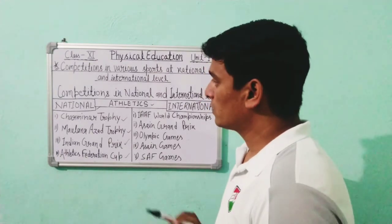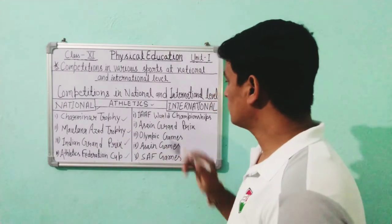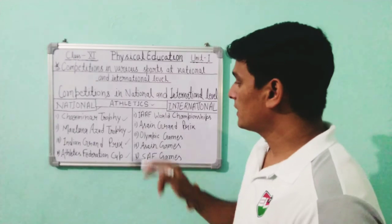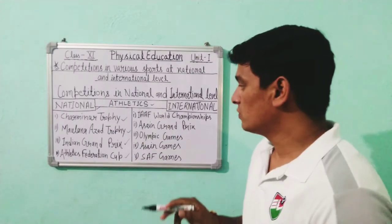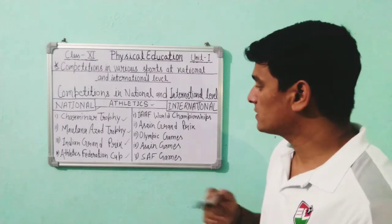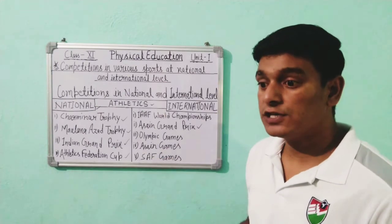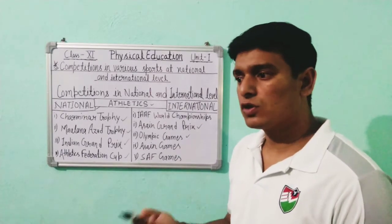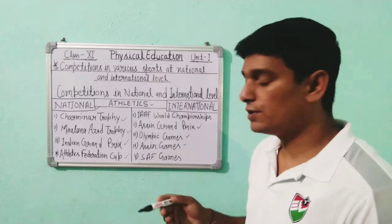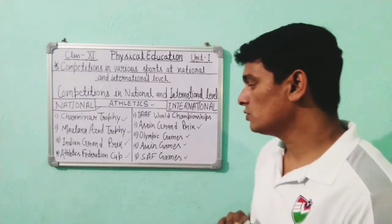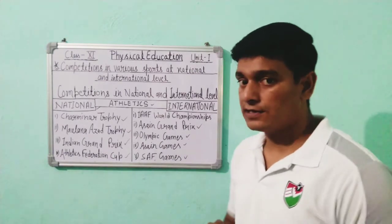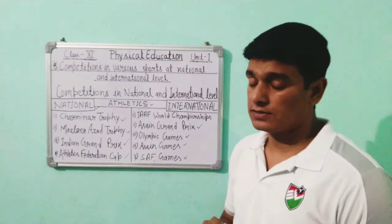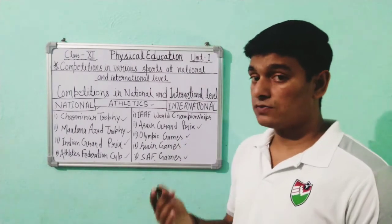For Athletics at the international level: the IAAF World Championship — IAAF stands for International Amateur Athletics Federation. Then there is the Asian Grand Prix, where different countries of Asia participate. Other international competitions include the Olympics, Asian Games, and SAAF Games. SAAF stands for South Asian Federation Games.